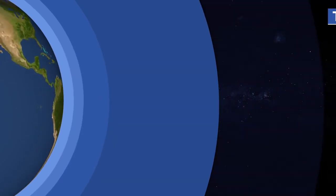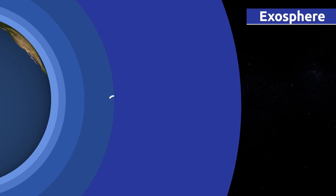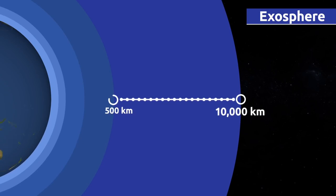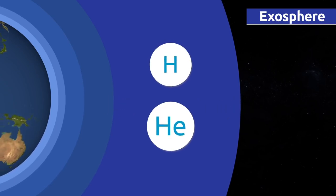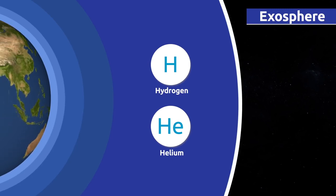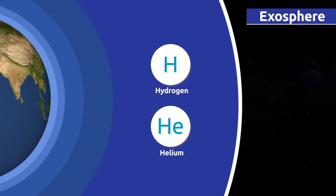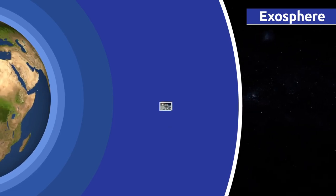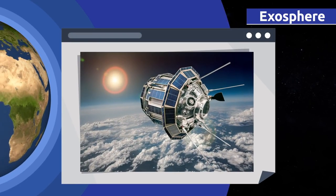The exosphere is the most distant layer from the Earth's surface. It extends to an altitude of approximately 500 to 10,000 kilometers above sea level. Air in the exosphere is very thin. There's nothing but hydrogen and helium there. This layer is our outermost limit with space and protects us from solar flares. Satellites orbit the Earth within the exosphere.